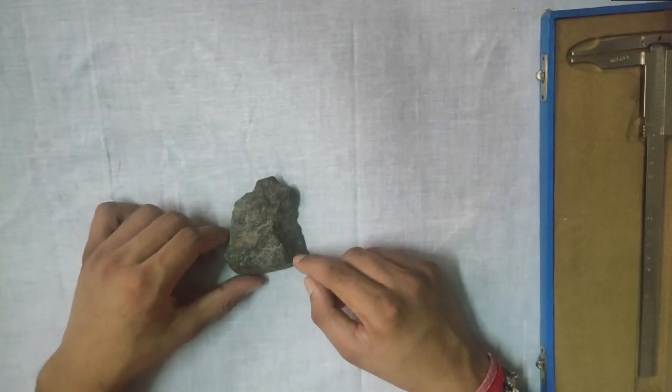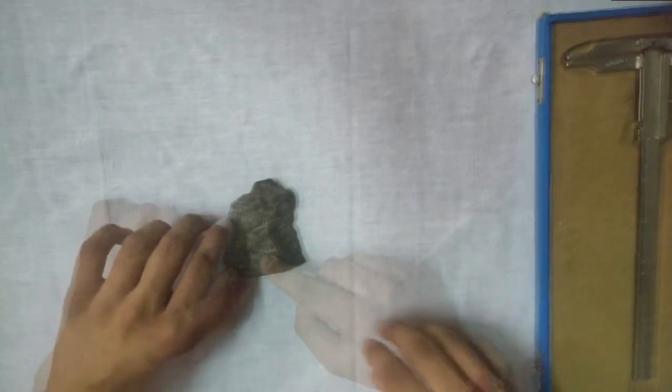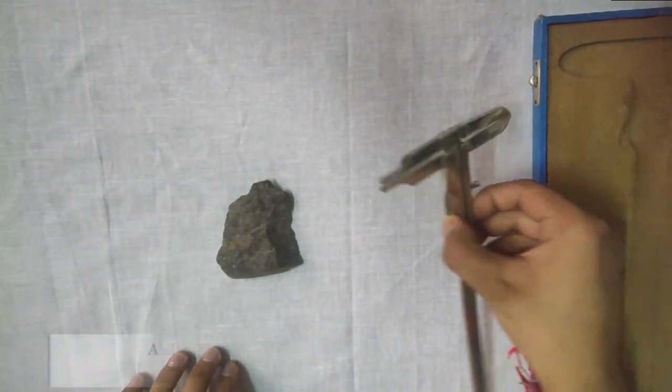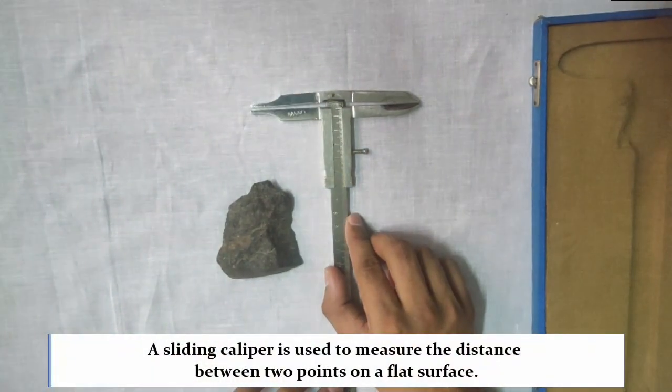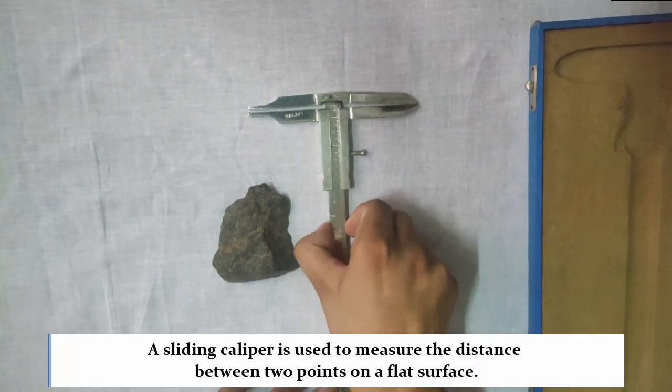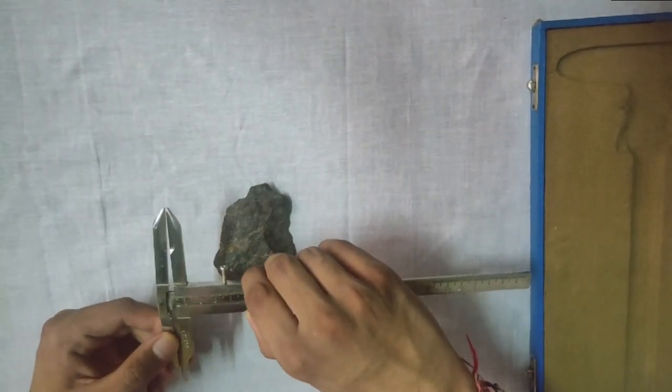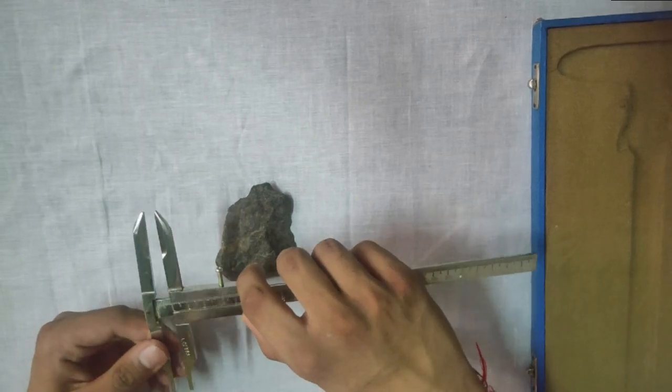To begin with our measurements we require a sliding caliper. A sliding caliper is a normal scale with a sliding holder attached to it which helps us to measure any object.